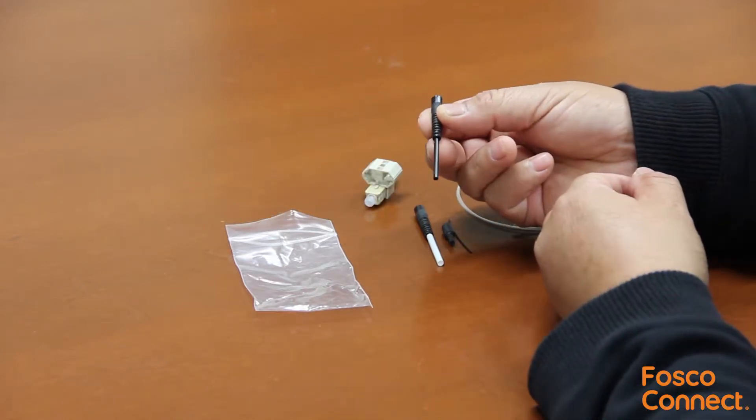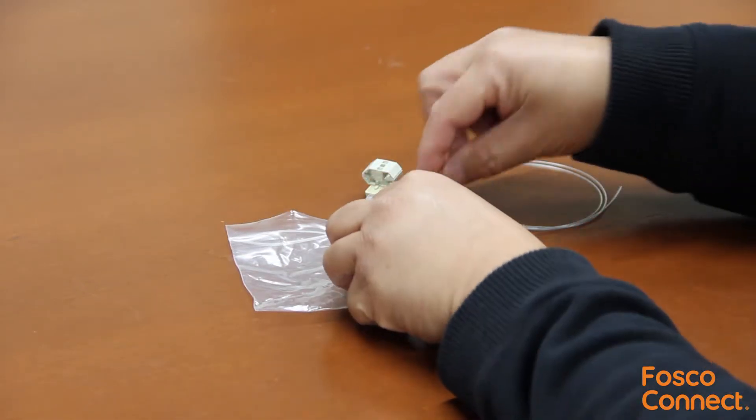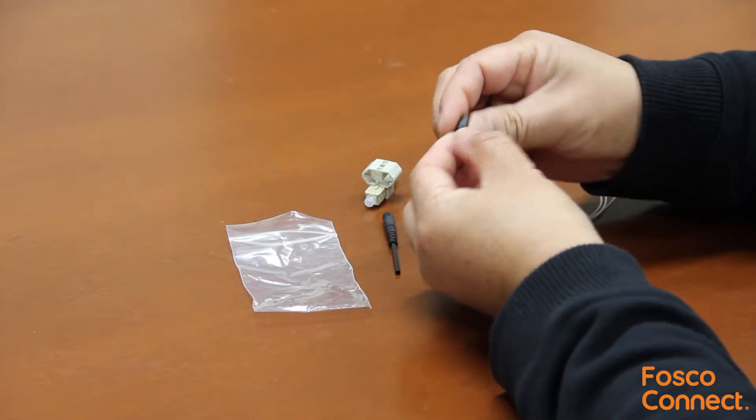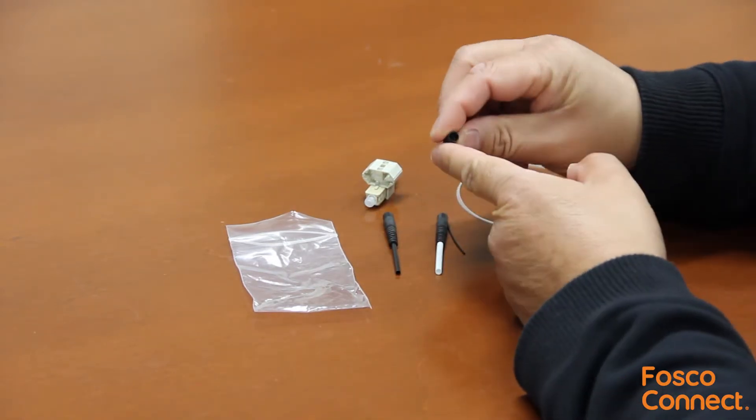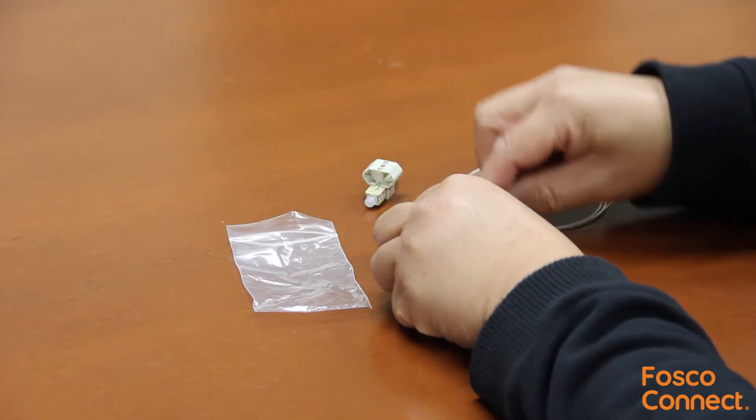Here is the rubber boot for 2mm fiber cable. This is the rubber boot for 3mm cable. And the last one is for 900 micron fiber. And here is the sleeve for 250 micron fiber.